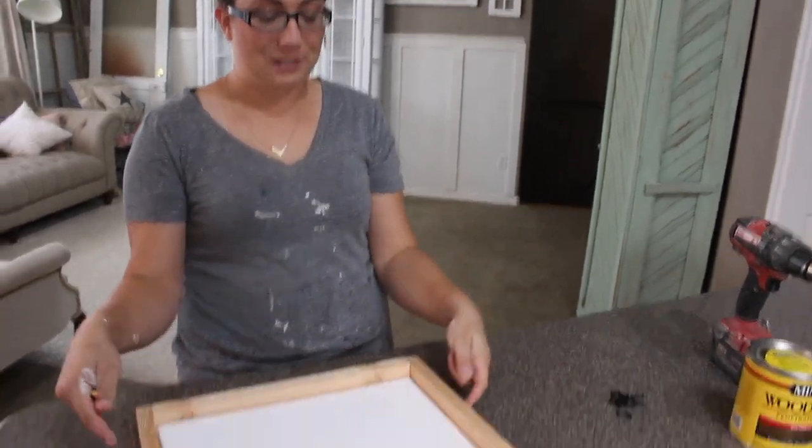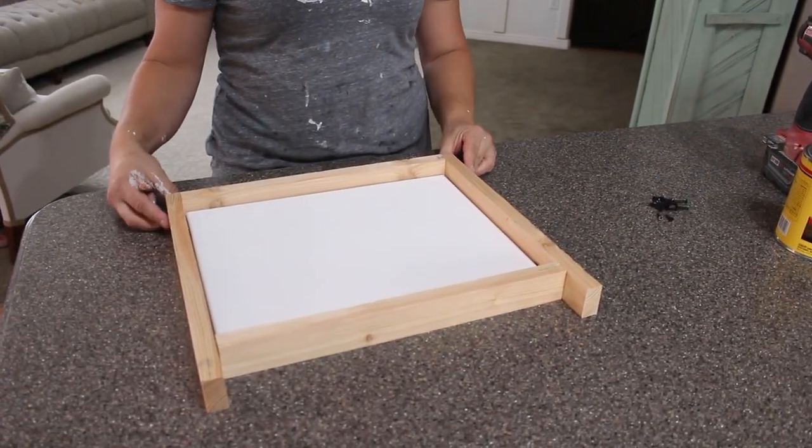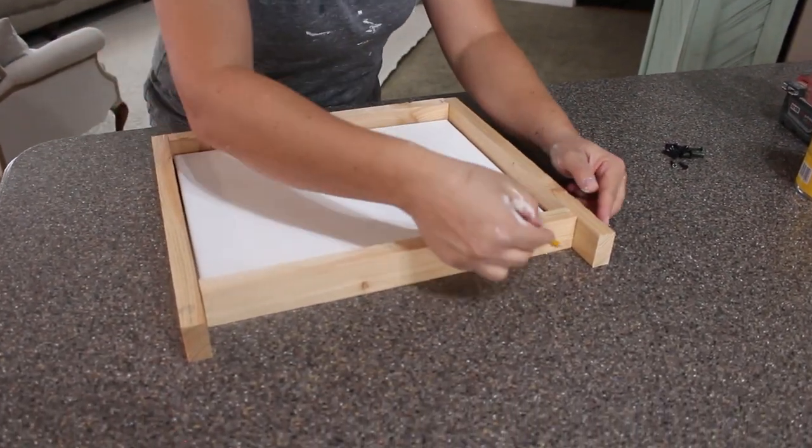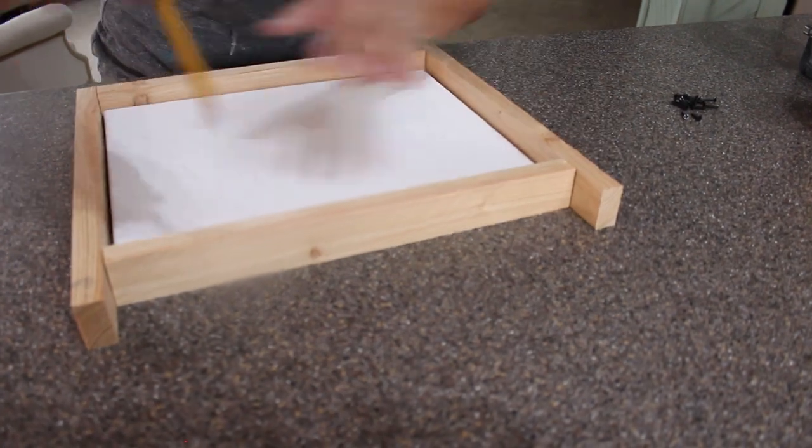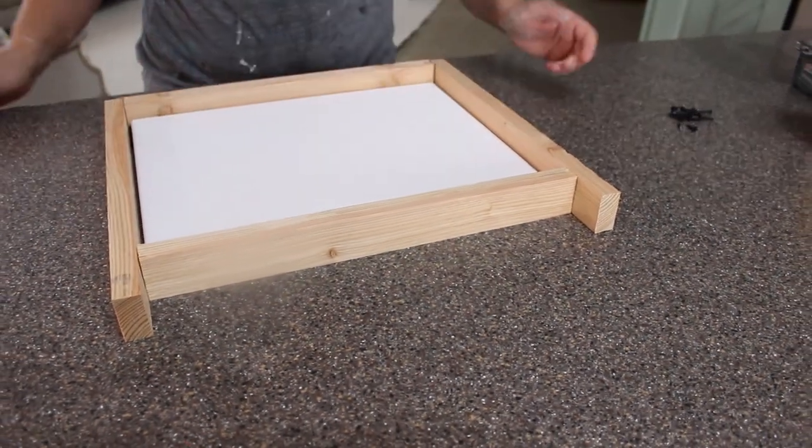Alright guys so in true Jamie Rae fashion I miscut the first two boards so we're putting those on the sides and I'm going to be measuring to see how to cut the length. So I'm just going to mark there and there and we'll get those cut and show you how we screw them all together.